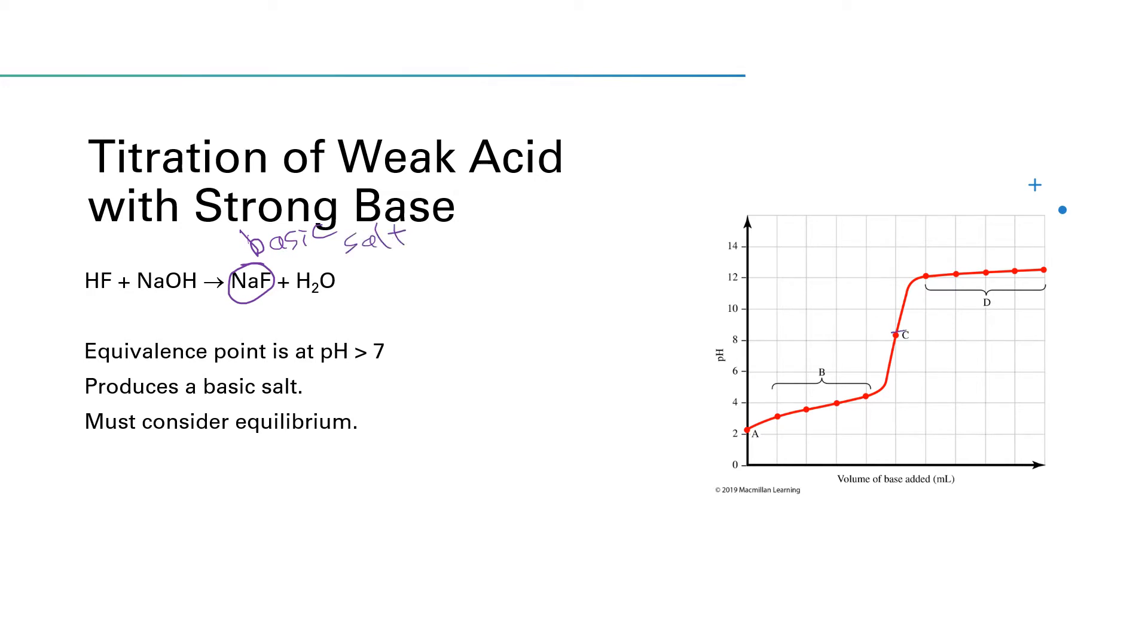So when we hit the equivalence point, we're going to be at a pH that is bigger than 7. That's a big difference compared to the strong acid, strong base titration curve, which makes a neutral salt and has an equivalence point at a pH of 7.